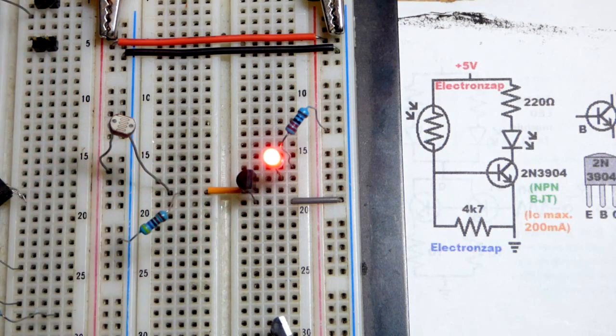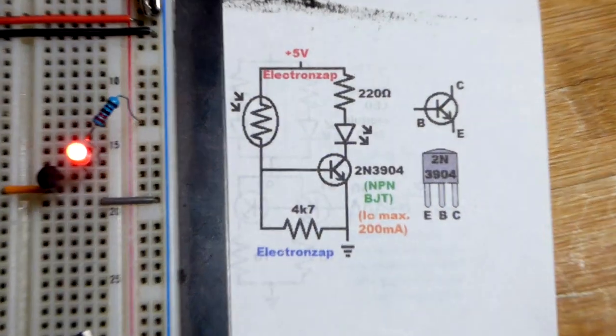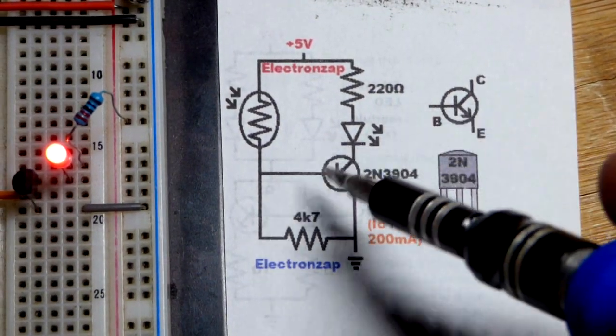We have a weak signal here that is controlling a transistor that can switch more power than the signal would provide alone.